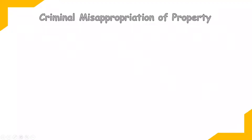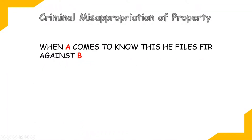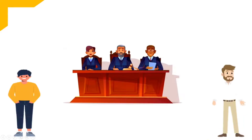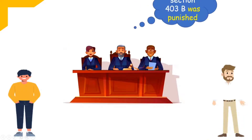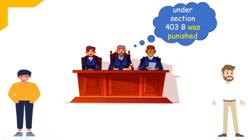When A comes to know, he files an FIR against B. This offense is covered under criminal misappropriation of property. Under section 403, B was punished because he misappropriated the property. Section 403 says that whoever misappropriates another's property which he doesn't own, or converts that property, he or she will be punished.